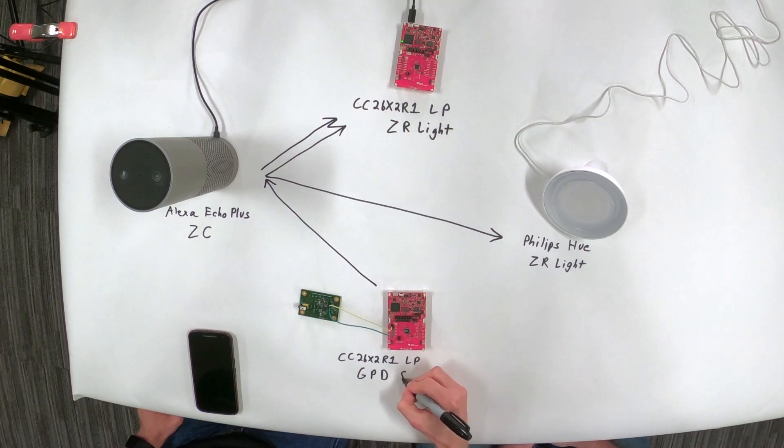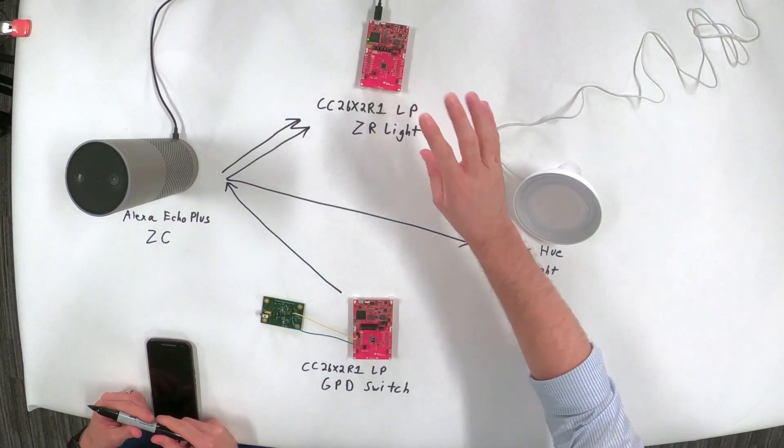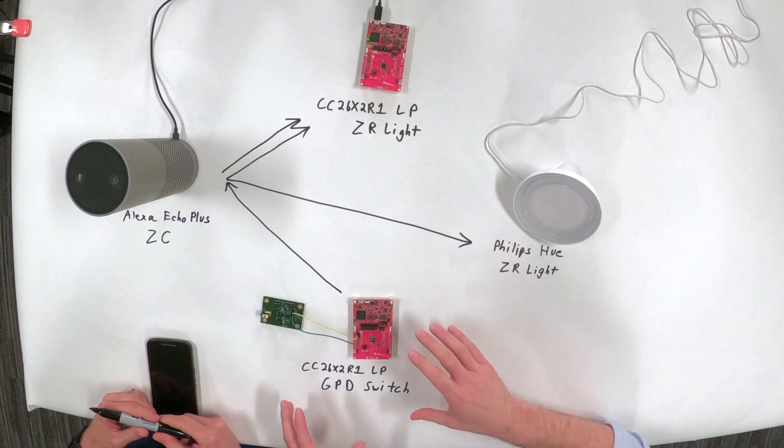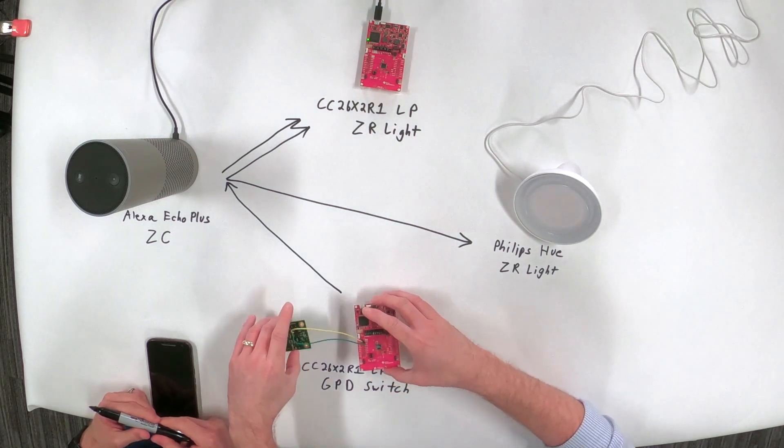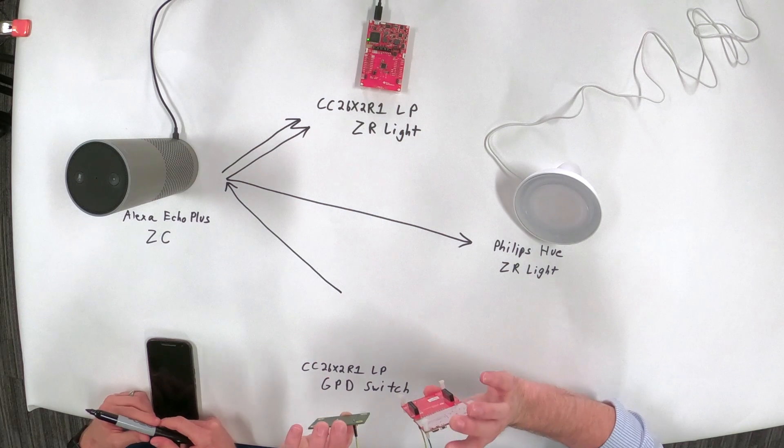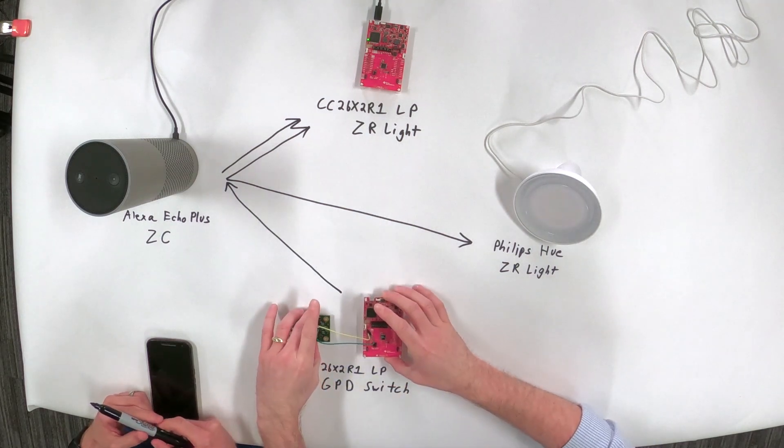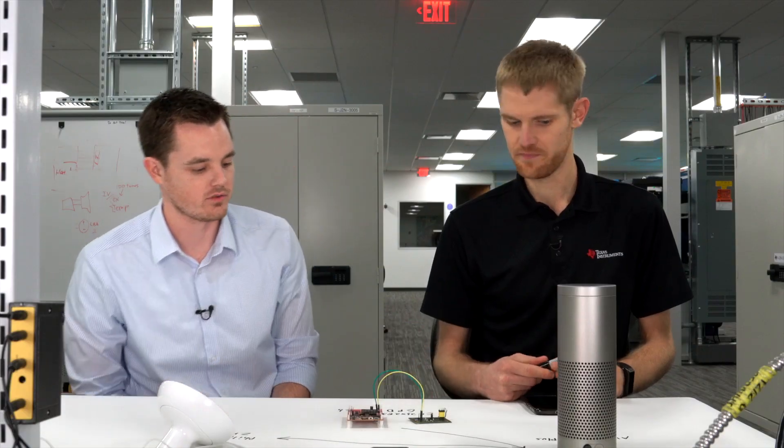And so should mention for the viewers that this is a green power device that is acting as a switch to the light. To the light. Gotcha. And so this guy can see we're powered, we're plugged in, that's the light, this guy, which is green power batteryless. This thing has no power source. It's just hardware here. Okay. Very cool. And let's see the demo, but really quick.